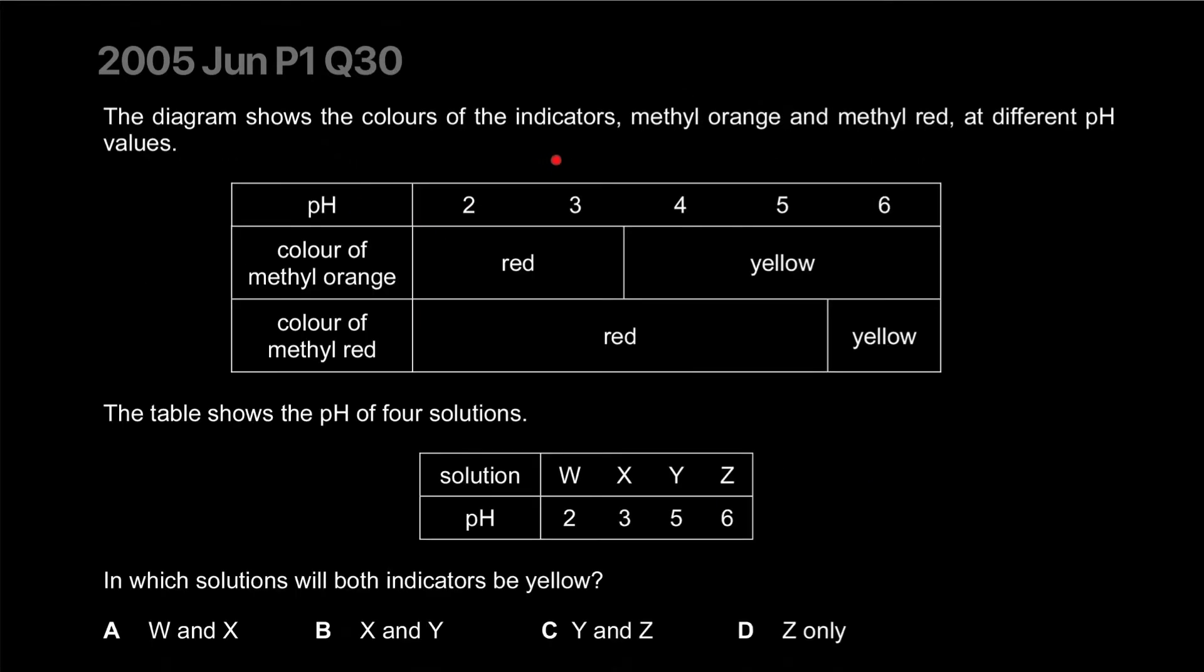The diagram shows the colors of indicators, methyl orange, methyl red, different values. The table shows the pH of four solutions, in which solution will both indicators be yellow. So for yellow, you have to be between, say 3.5. That's not yellow. Over here, right? It needs to be 5.5 or higher, the pH. So yeah, Z only, isn't it? The answer is D.